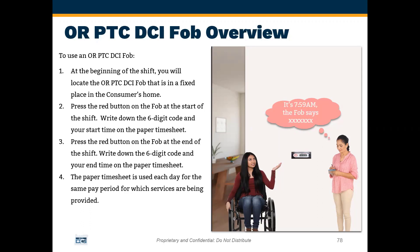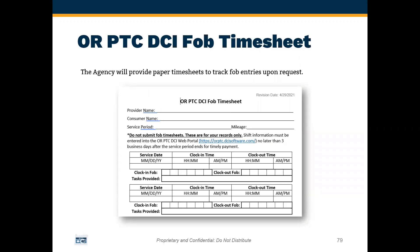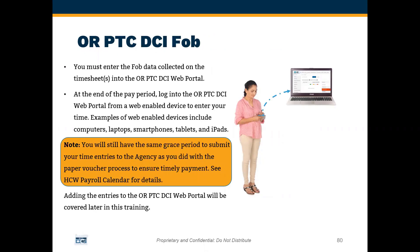This paper timesheet is used each day for the same pay period for which services are being provided. The agency will provide paper timesheets to track FOB entries upon request. You can also use a scrap sheet of paper, but record your FOB token at the clock-in and clock-out of each shift. Once you have access to a device with an internet connection and a web browser, you may need to enter your EVV-compliant entries using the ORPTC DCI web portal.